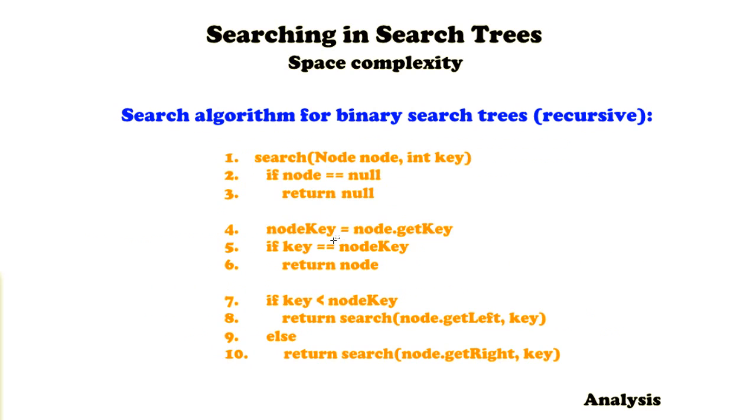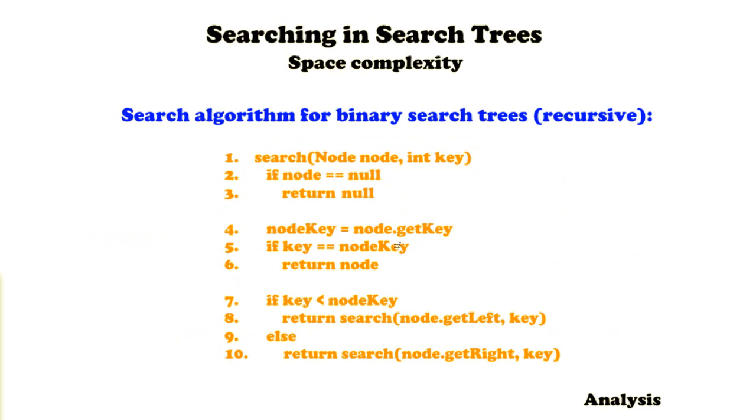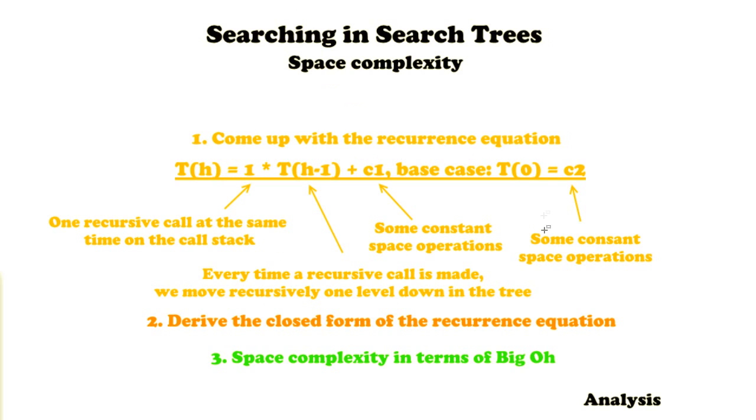Then there's the c1 which stands for the constant operations that are performed in terms of space complexity. For example, the nodeKey that is assigned and saved in memory—we have to take these things into account as well. Then the base case is c2, a constant operation, because we are returning a node here and a null value here which have to be taken into account as well. So that's why this recurrence equation holds.